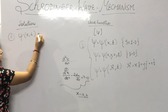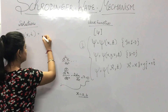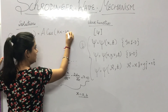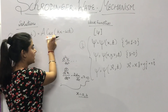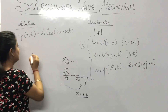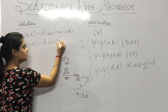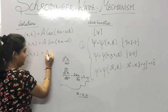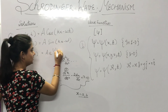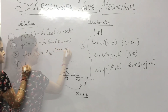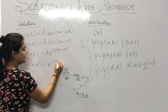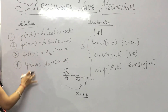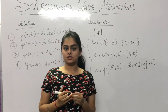We can take possible solutions for the wave function. These are: A cosine of kx minus omega t, A sine of kx minus omega t, or exponential solutions such as A e to the power i(kx minus omega t), and A e to the power minus i(kx minus omega t). So these are the four solutions we can use to solve the Schrödinger equation.